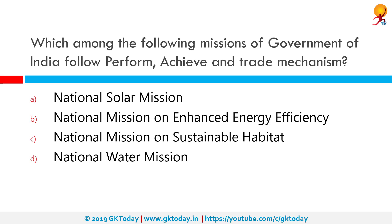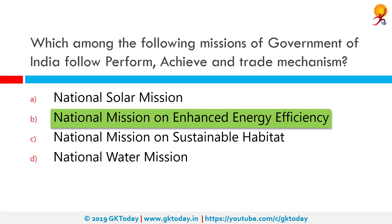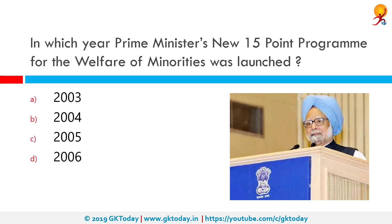Which among the following missions of the Government of India follows the Perform, Achieve and Trade mechanism? The correct answer is the National Mission on Enhanced Energy Efficiency. This is aimed to promote the market for energy efficiency by fostering innovative policies and effective market instruments. The Ministry of Power through the Bureau of Energy Efficiency oversees the progress of this mission.